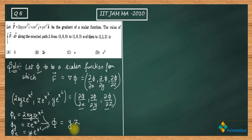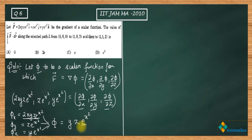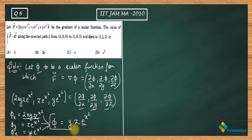Therefore z should also appear linearly. When differentiating partially with respect to x, we get 2x·e^(x²), which means e^(x²) is present in phi. There are other methods using integrals and differential equations, but making this guess speeds up the solution. So we get our phi.